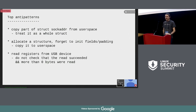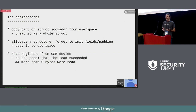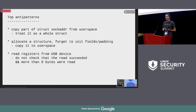The top anti-patterns are as follows. A lot of places in the kernel copy parts of struct socket address from user space, but treat it as a whole struct. Also, a lot of people allocate a structure but forget to initialize some of its fields or forget to initialize the padding, which is also critical — the structure then gets copied to user space, so some pointers may leak. Also, USB code initializing USB devices often doesn't check that the read from the device succeeds and actually read more than zero bytes.